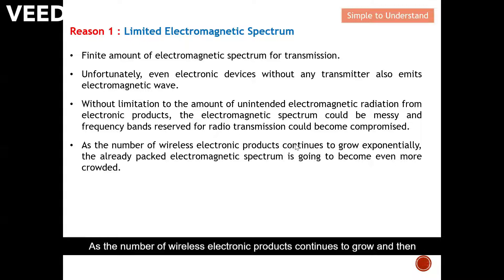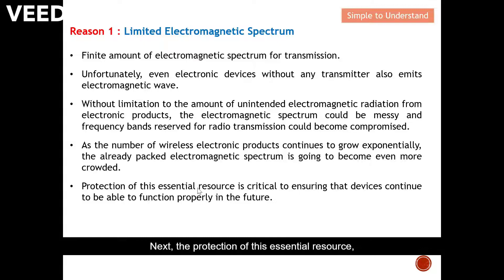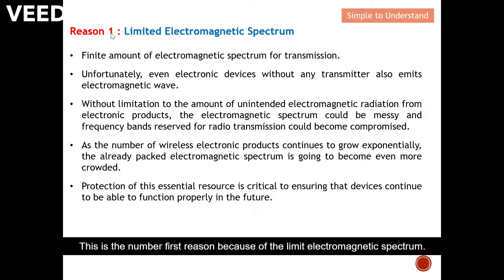As the number of wireless electronic products continues to grow, the already packed electromagnetic spectrum becomes even more crowded. We therefore need a protocol to ensure that everybody is compliant with EMC requirements. Protection of this essential resource is very critical to ensure that devices continue to be able to function properly in the future. This is the first reason — the limited electromagnetic spectrum — and why we need to govern the rules.